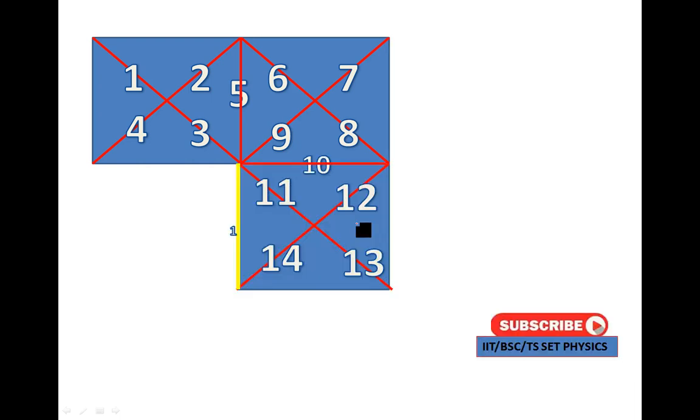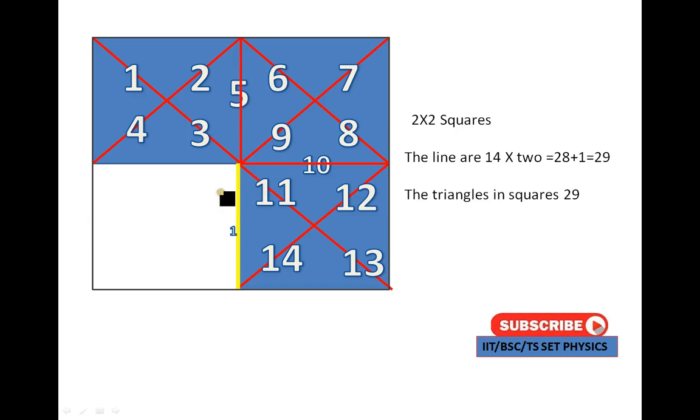Then I will add the vertical square. My simplification: It is converted into 2 cross 2 squares. The lines are 14 into 2, 28. One line is not joined to another square, it is considered as 1. The value is 1. Then 14 into 2, 28, plus this 1 is added, 28 plus 1. The value is 29. It is 2 cross 2 squares.